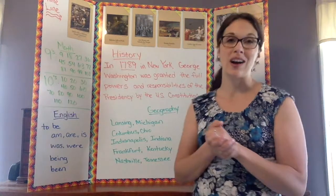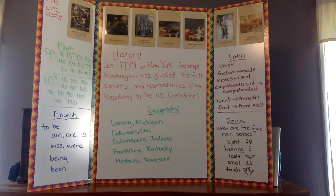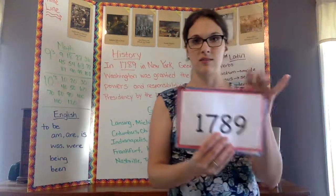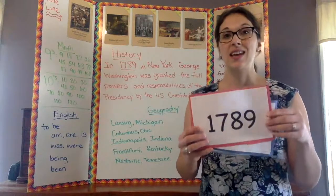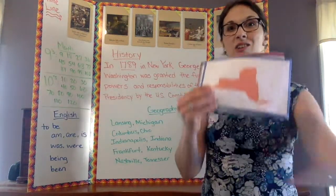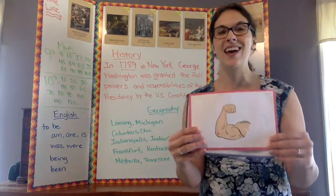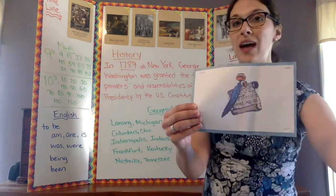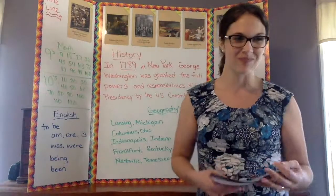Our history sentence is about George Washington. I gave each child pictures, and they would each hold up their sign when we got to that part of the sentence. So it goes like this: In 1789 in New York, George Washington was granted the full power and responsibilities of the presidency by the U.S. Constitution. We had fun going around in the circle having everybody hold up their picture for the history sentence.